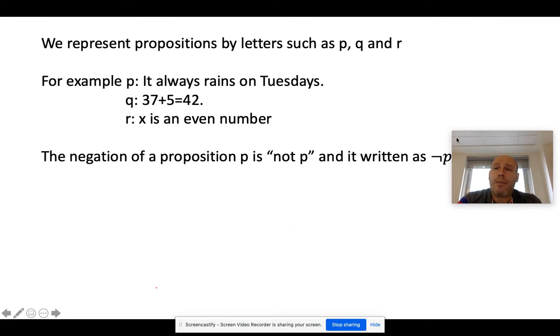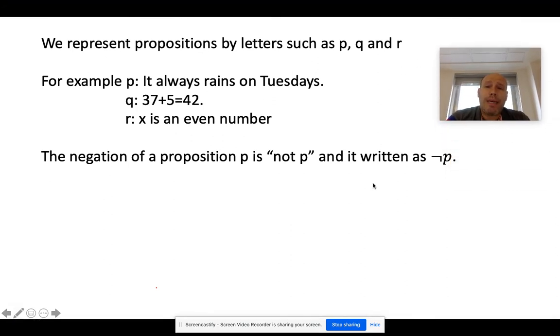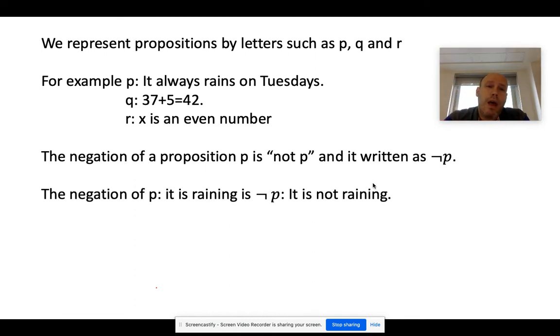The negation of a proposition P is not P, and it is written as symbol P. That's a symbol for not. The negation of P: it is raining, is not P: It is not raining.